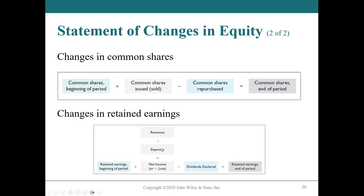Dividends are declared to the share owners — they're like investor treats. For example, if you bought a share for one hundred dollars and a dividend is declared at two dollars per share, you would receive two dollars times the number of shares you hold as at the date of record. So the retained earnings formula is: beginning retained earnings plus net income (or minus net loss), minus dividends declared, equals ending retained earnings.